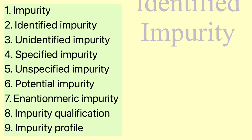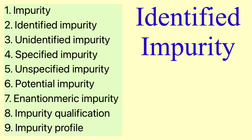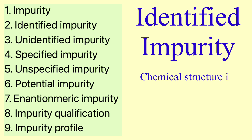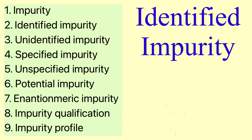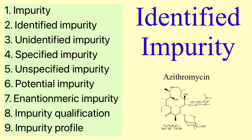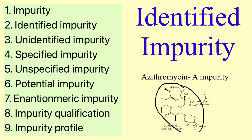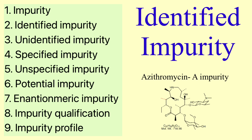The next term is identified impurity. When the chemical structure of your impurity is known, it will be called an identified impurity. For example, if we have an impurity and we know its chemical structure, we call it an identified impurity.